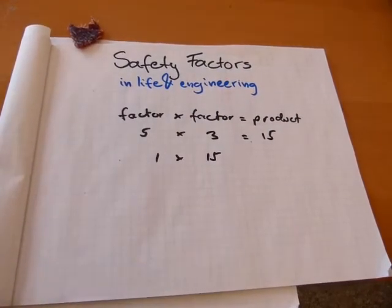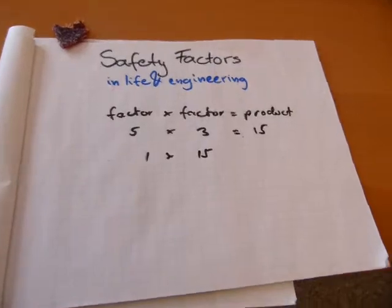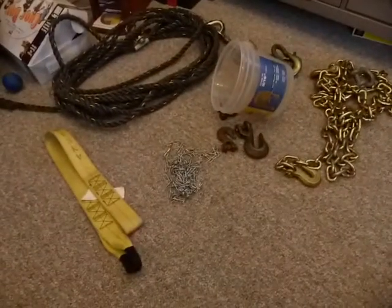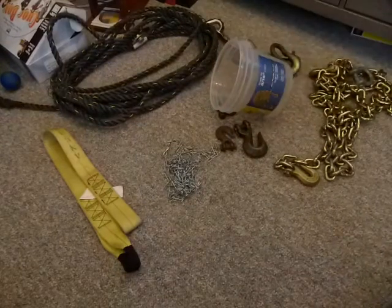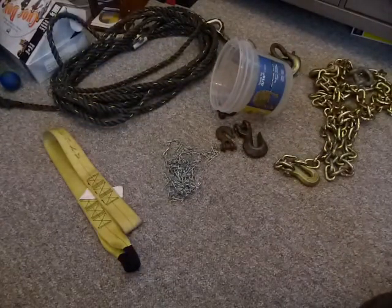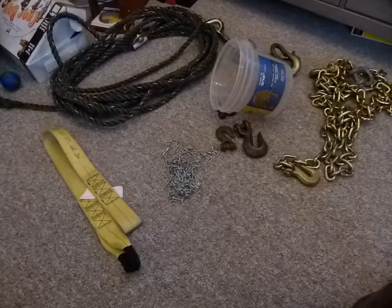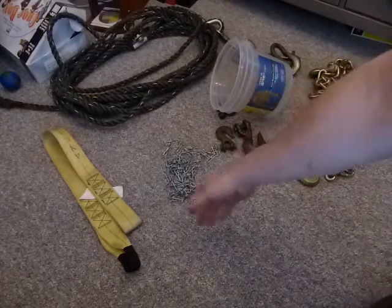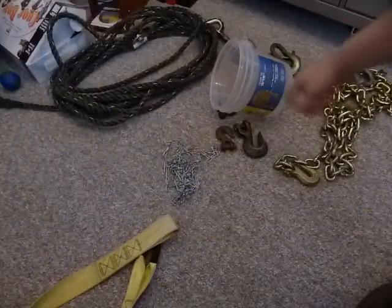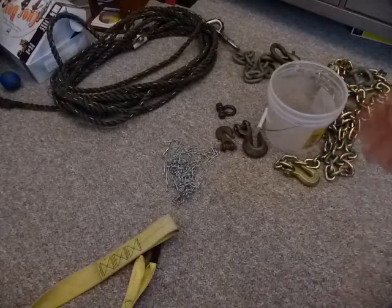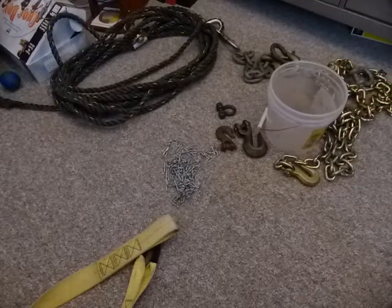In terms of material science, take a look at what's on the living room floor here. All of these things have safety factors or design factors, and they're not printed on the material — they need a little bit of math. Chains, hooks, web slings, ropes — all of this stuff comes with a safety factor.